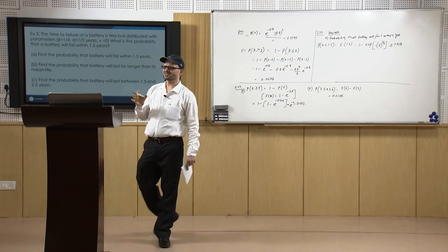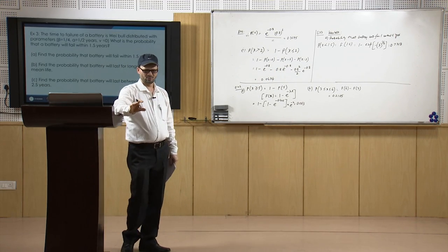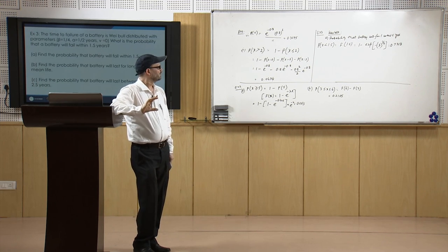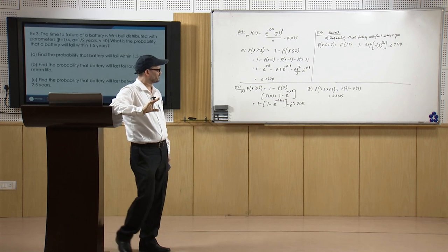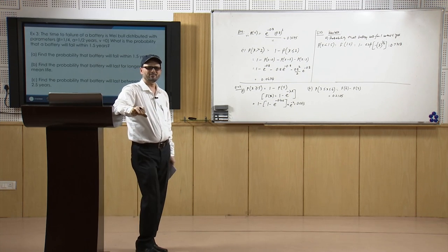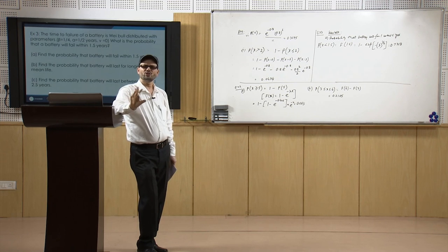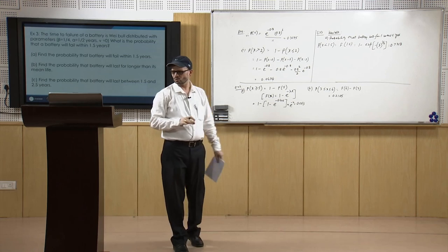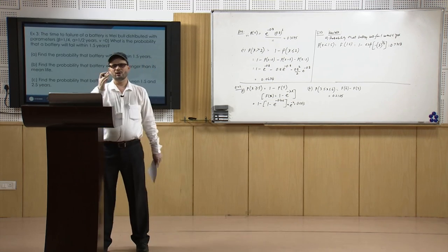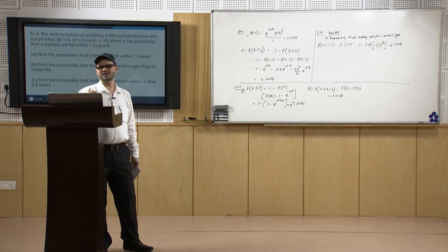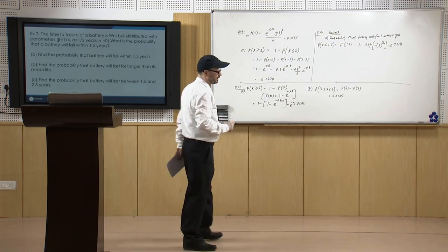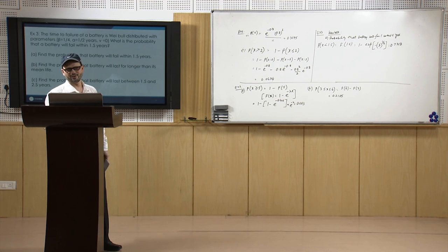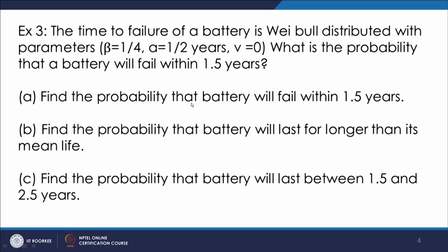To confirm: we know α = 1/2, β = 1/4, and ν = 0. The cumulative function is F(x) = 1 − exp(−(x/α)^β), with ν = 0. With x = 1.5 and α = 1/2, x/α = 3, raised to the power β = 1/4, we get the value 0.7318. So the probability that the battery will fail within 1.5 years is 0.7318.